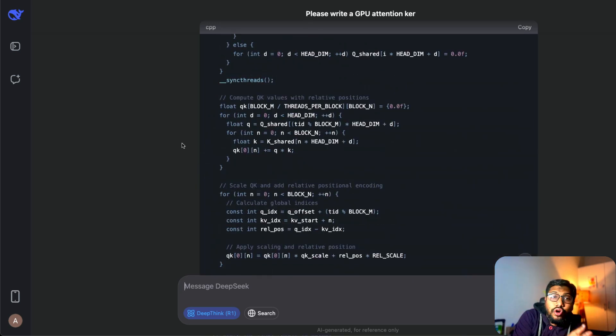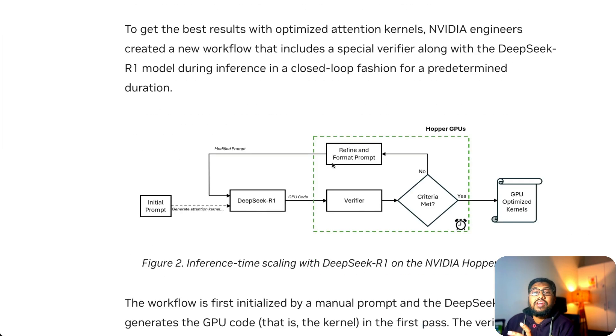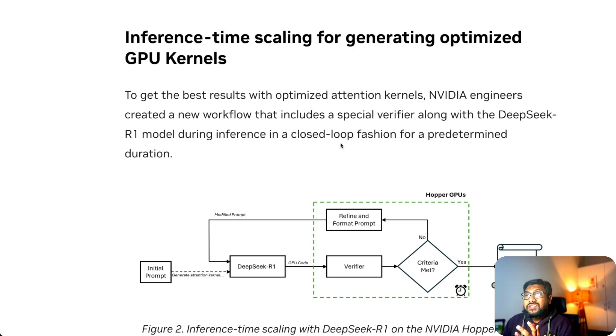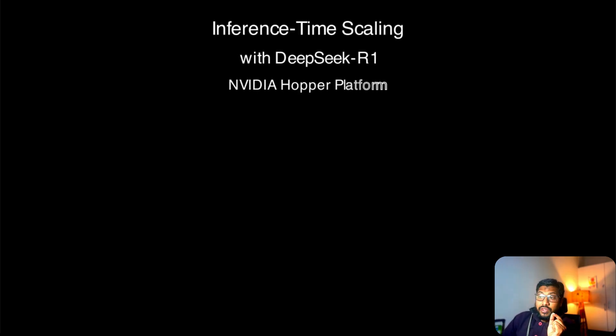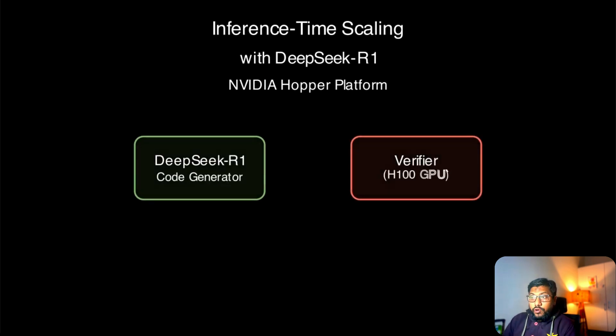What NVIDIA's true magic here is to create a workflow that is doing something we call inference time scaling for generating optimized GPU kernels. Rather than using it in a zero-shot setting, which we did right now, what NVIDIA engineers very cleverly orchestrated is you give the initial prompt, just like we gave, and it goes to DeepSeek R1. Now it enters a new system where you have a verifier.